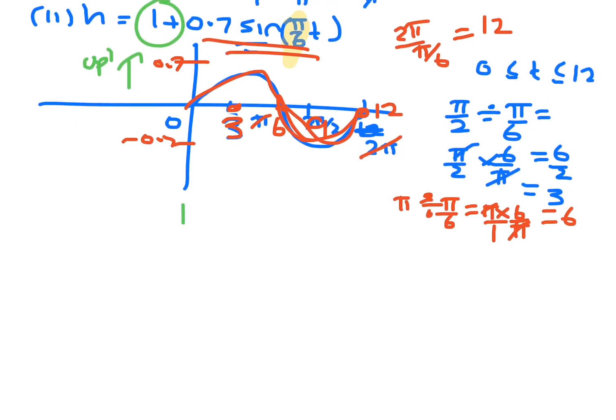So when it shifts up 1, let's just do it here and do it a bit neater. So I go 12, 0, 3, 6, and 9. The 0, that's 0.7. That's what it goes up to. 1's there. So when I shift it up 1, it will go up to 1.7.